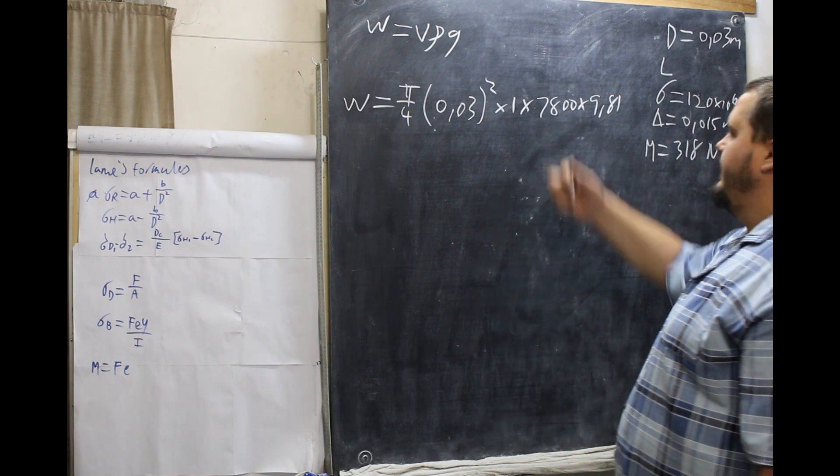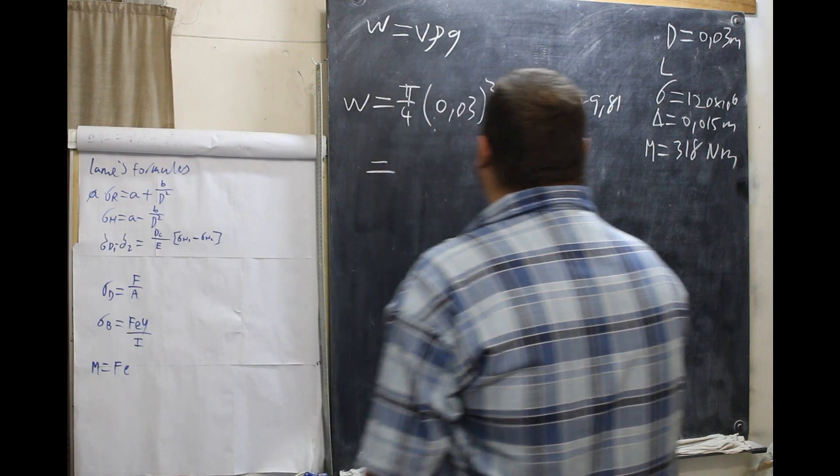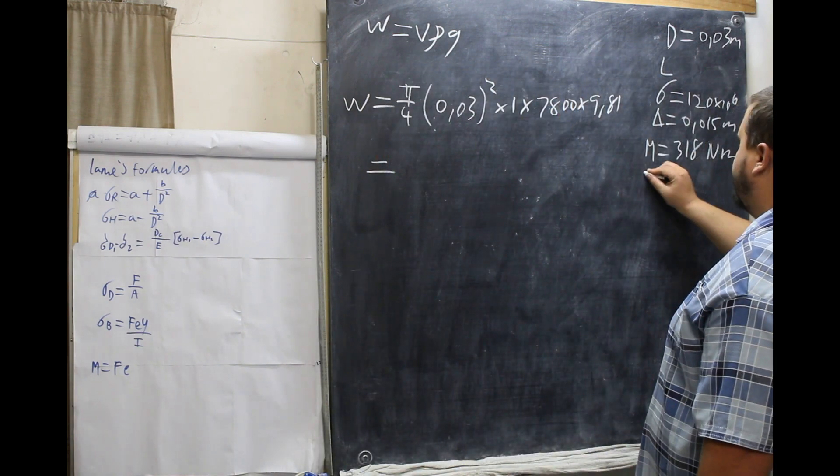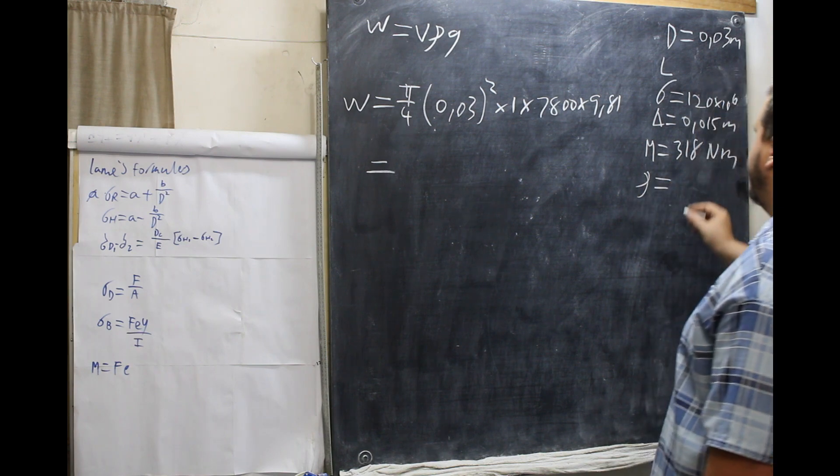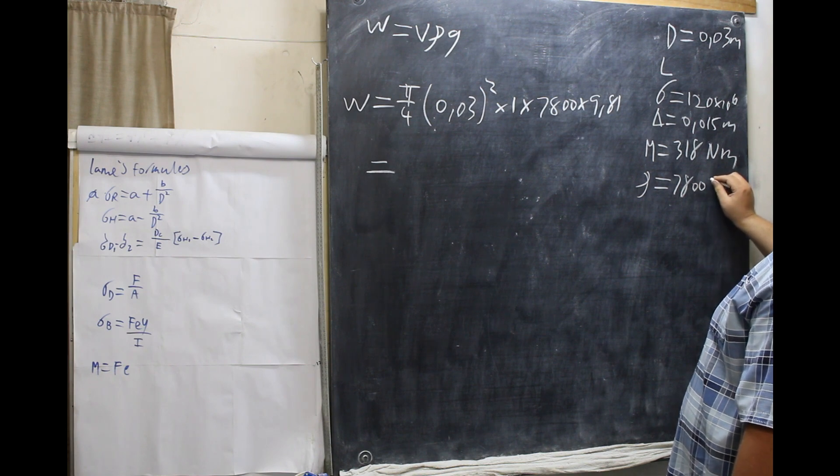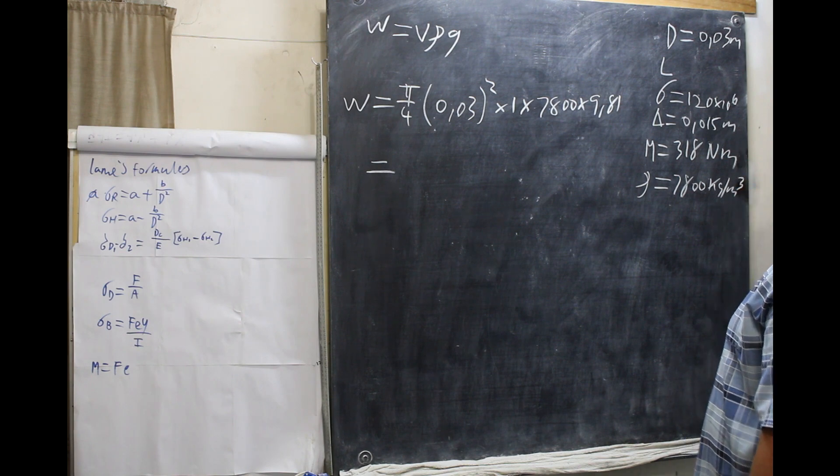So, that's our formula here. And now, let's put this in because we will need that. Our density of our shaft is 7,800 kgs per meter cubed. That will be valuable.